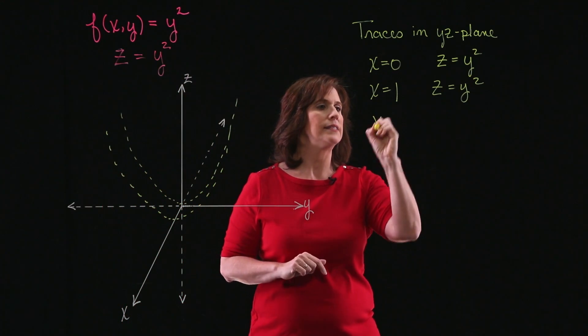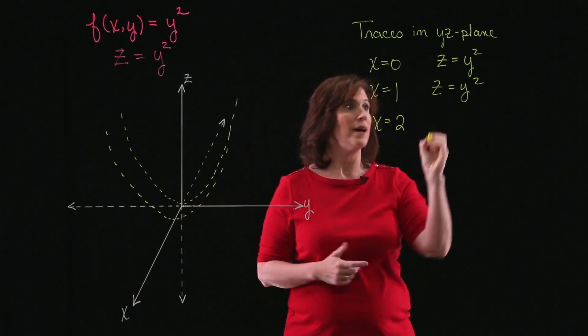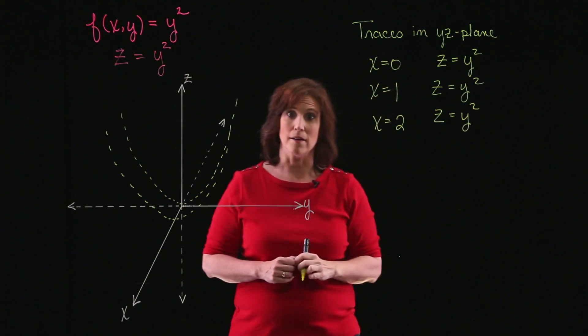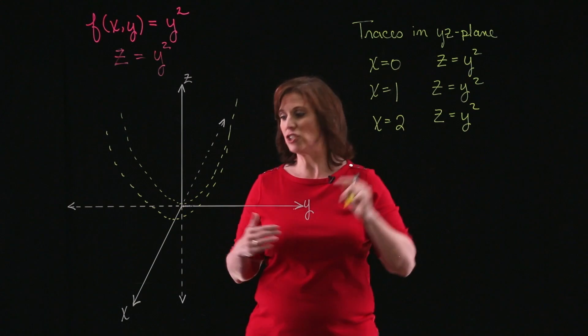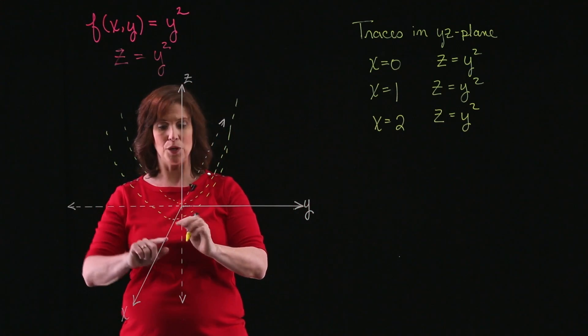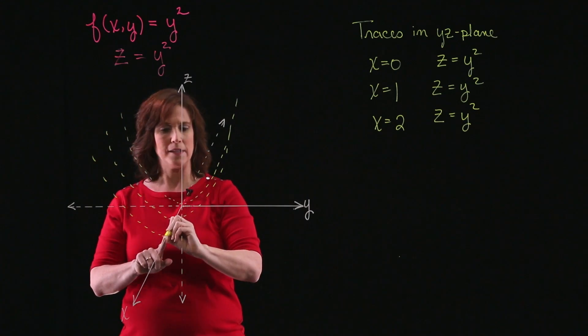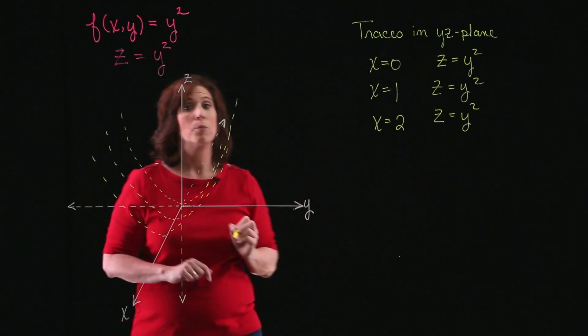Let's try one more. Let's see what happens when x equals 2. Again, my equation is z equals y squared. Same parabola. It's just that I've now moved out to x equals 2 on my x-axis, and I have the same parabola.